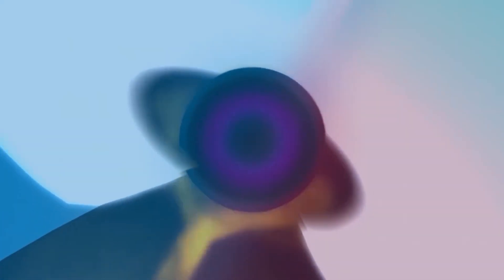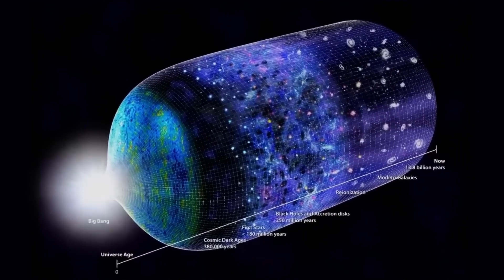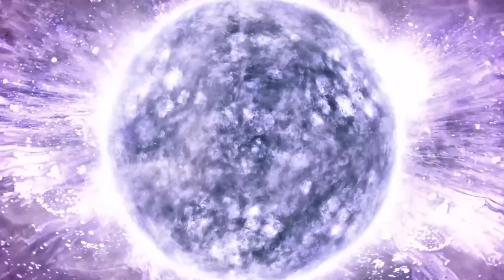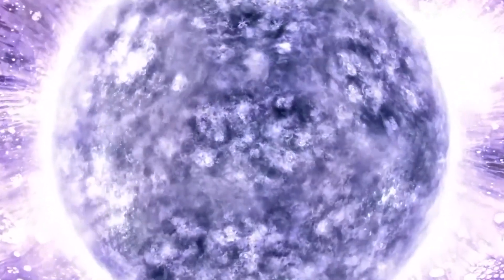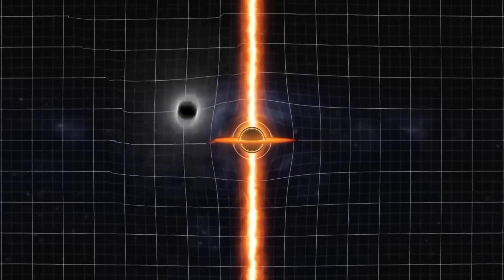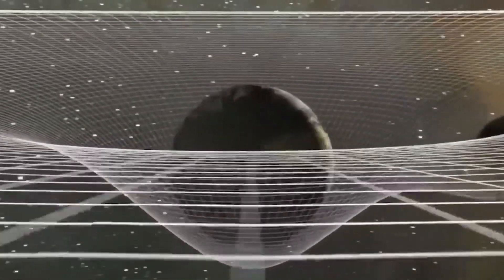Objects with mass warp space-time, creating a gravitational field that affects the motion of other objects. To visualize this, we can imagine a sheet of paper representing space-time. If we place two points onto the paper and draw a line between them, we are representing how objects move through space-time.